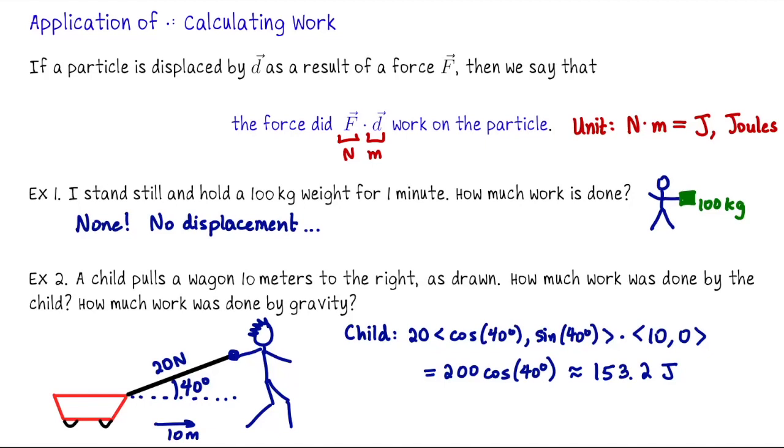How much work did gravity do? The answer is gravity didn't do any work because gravity didn't cause any displacement for the wagon. The displacement was entirely horizontal, not vertical, so gravity did no work.